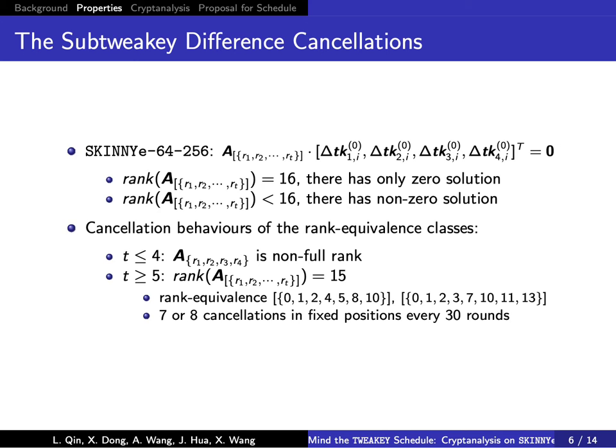In SkinnyE 64/256, the non-full rank properties can lead to more sub-tweakey difference constellations than expected. When the matrix is full rank, the master key difference has only the zero solution. When the matrix is non-full rank, the master key difference has non-zero solutions, which means sub-tweakey difference constellations can happen.